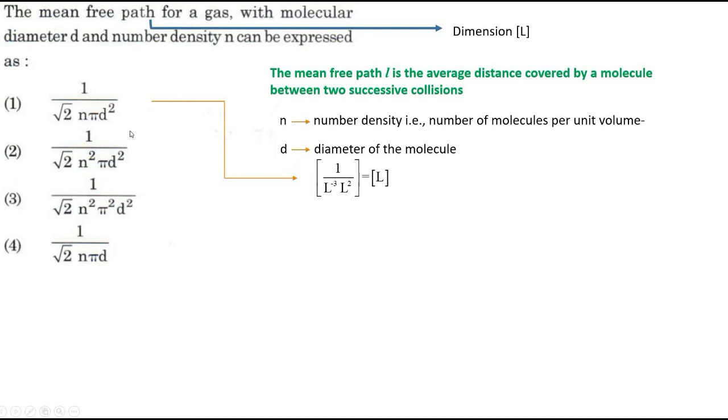But anyway, we will proceed and find out the dimensions for the other options also. So now see for this. One, no dimension. Root 2, no dimension. N square, L power minus 6. Pi no dimension, because it is a number, 3.14. D square, L square, because D is length.